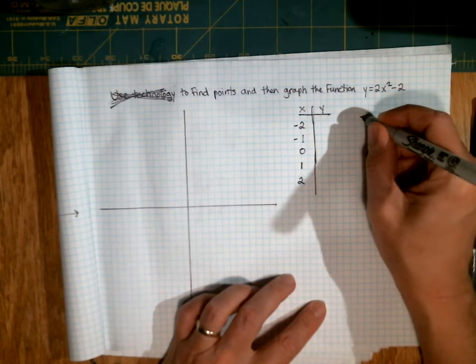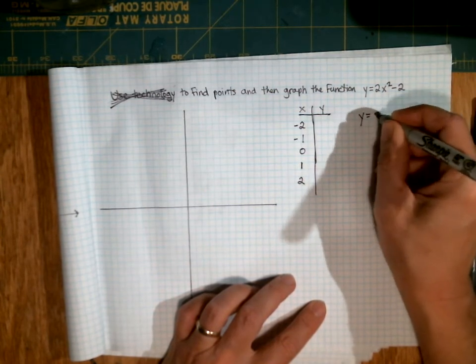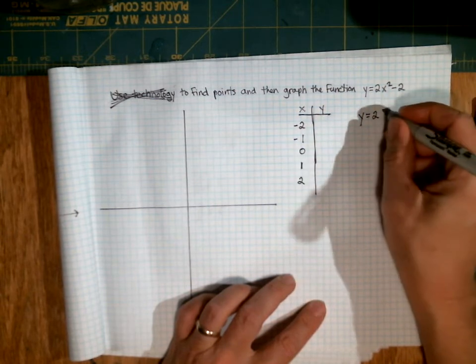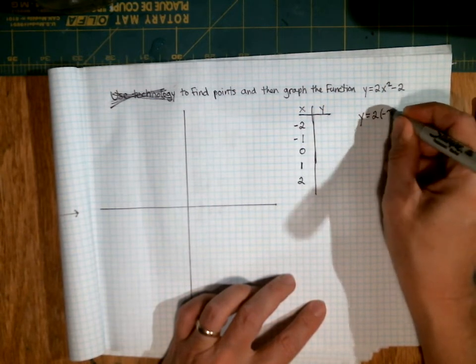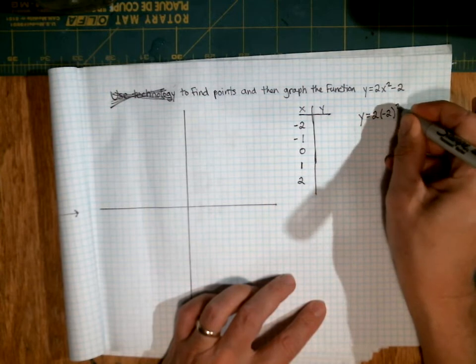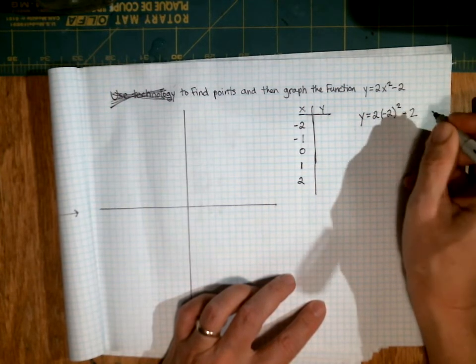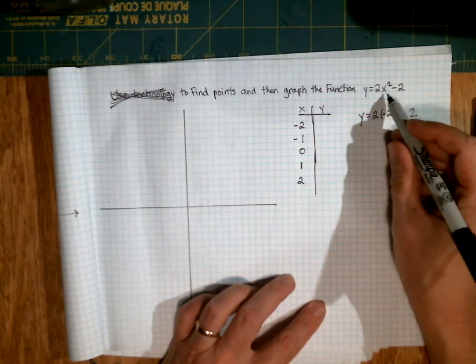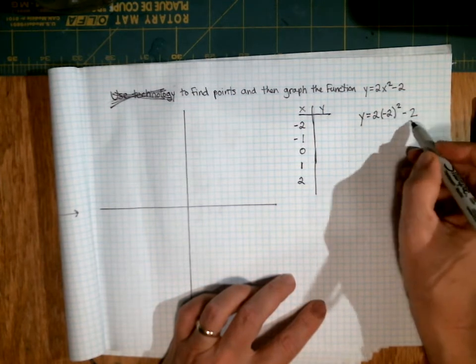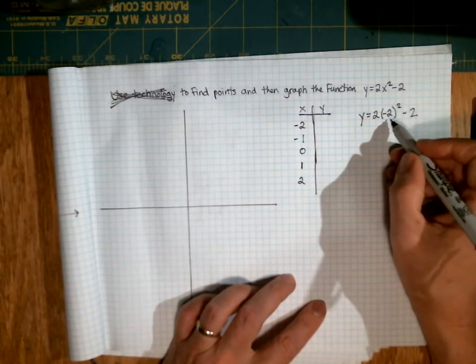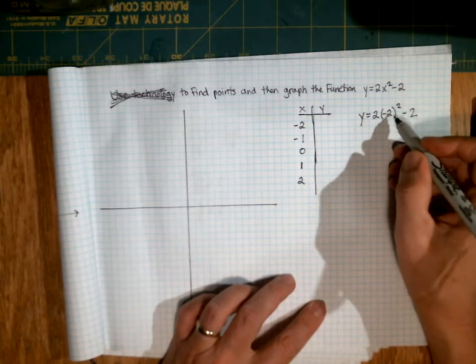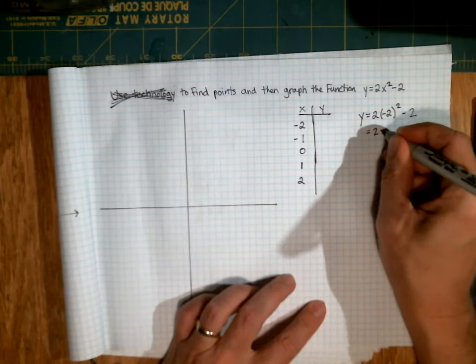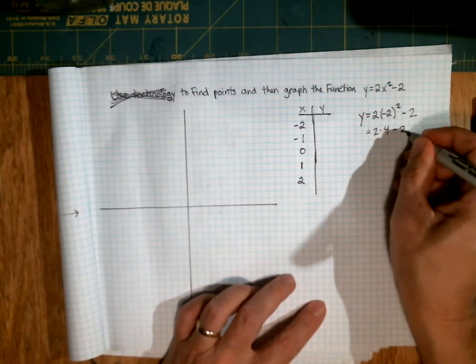And what I'm going to do is I'm going to write down the equation, y equals 2. And then instead of writing x, I'm going to write a negative 2 because that's what I'm figuring out. What is y when x is negative 2? So I've put a negative 2 for x. I've substituted negative 2 in for x. And so now I'm going to solve this out. And I'm going to use my order of operations. So I'm going to square negative 2 first. So that is 2 times 4 minus 2.